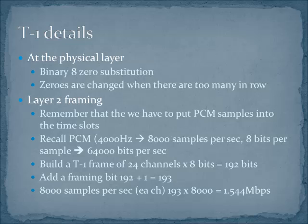We'll talk more about codecs another time, but pulse code modulation channels are 64K. This is because PCM gives us 8,000 samples per second — twice our bandwidth — and each sample is allowed 8 bits to represent the value. So 8,000 samples per second times 8 bits per sample equals 64K. Each channel in a T1 is one of these PCM-encoded voice channels, or what we call a DS0. So we have 24 DS0s — really 24 64K channels put together.